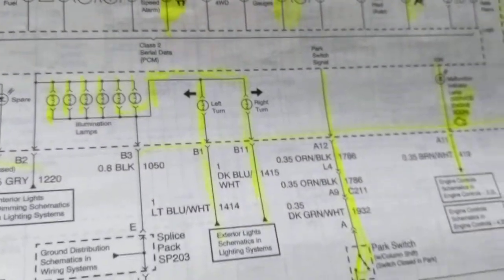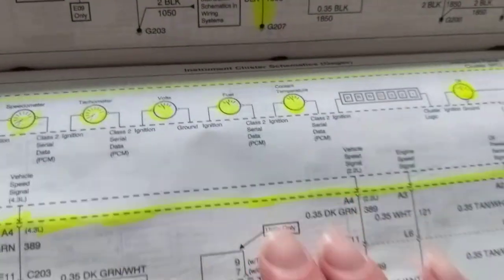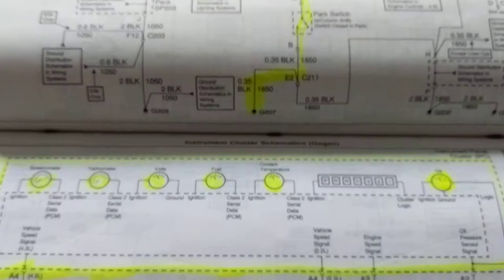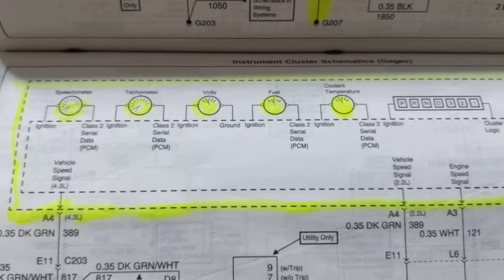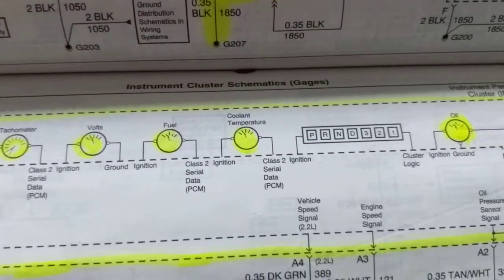So that takes care of that. As you can see, there's another diagram over here also of the instrument panel. And these are, if I can focus, these are speedometer, tachometer, volts, fuel.